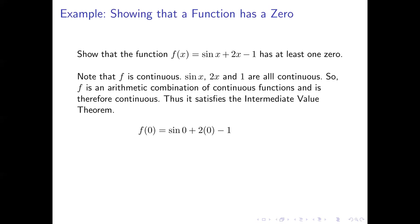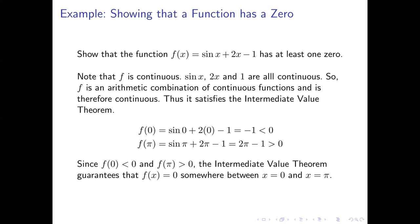Let's look at f(0). f(0) is going to be sin(0) + 2(0) - 1, which is just -1. Notice that -1 is less than zero. Let's take a look at f(π). That's sin(π) + 2π - 1. Sin(π) is zero, so that's just 2π - 1, and that number is greater than zero.